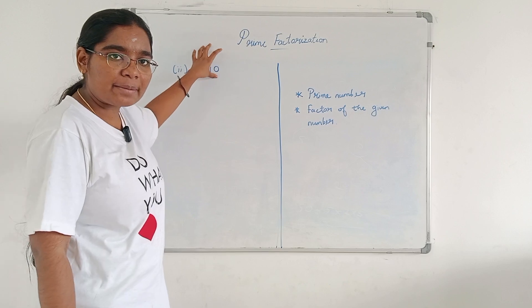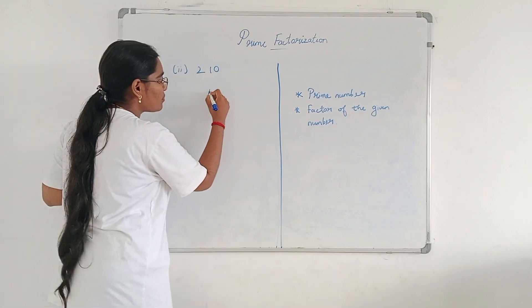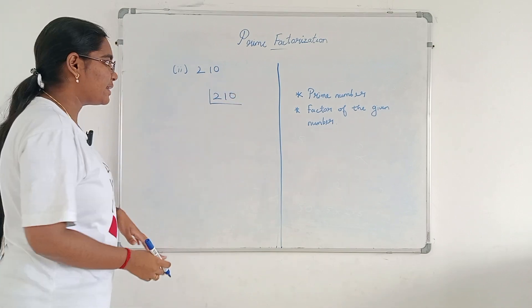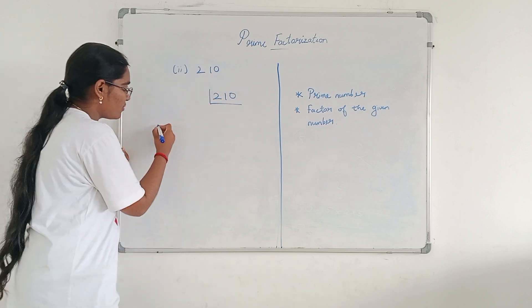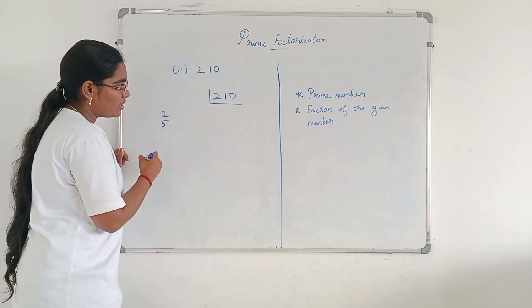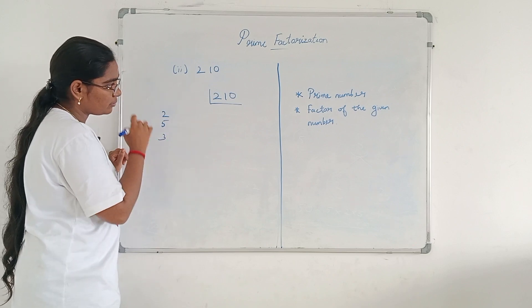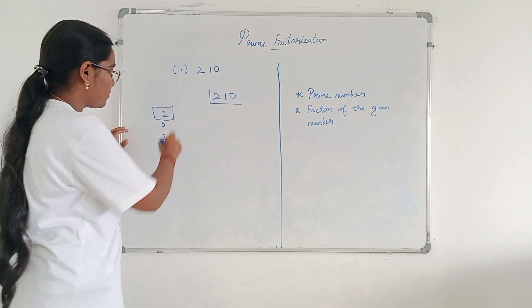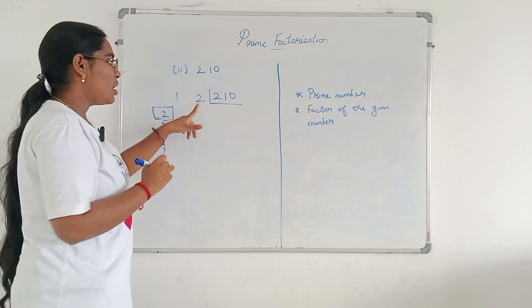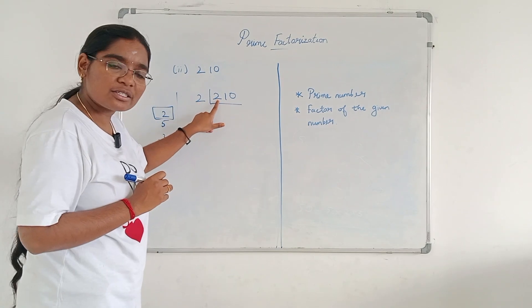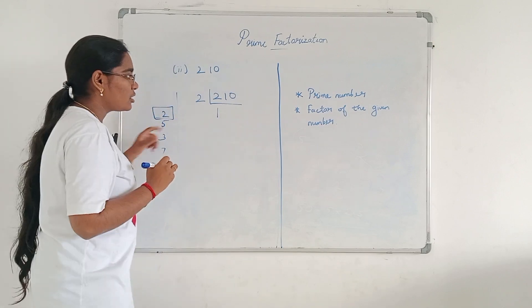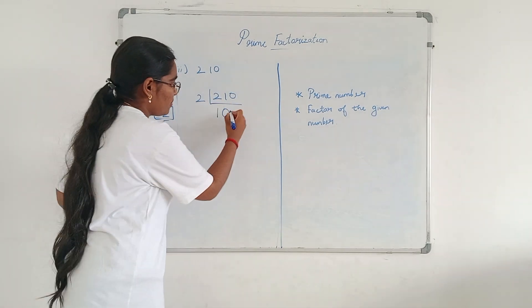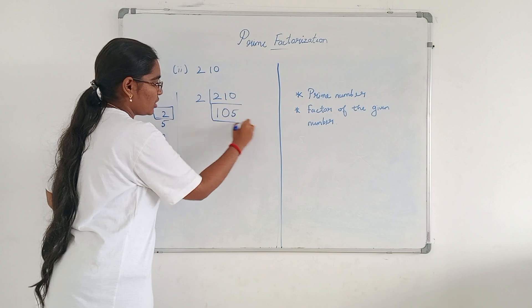We are going to write this composite number 210 in terms of its prime factors. By division method: 210. According to divisibility criteria, 210 comes in the 5 table, 2 table, 3 table, and 7 table. I am going to choose 2. In the 2 table: the ones digit is 0, so 2 into 105 gives 210, meaning I write 105.